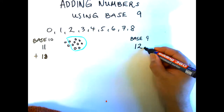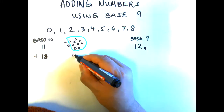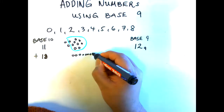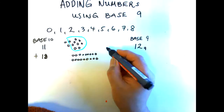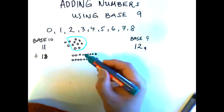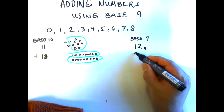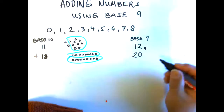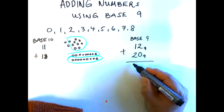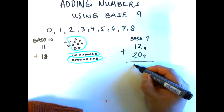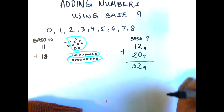So 11 is written as 12 in base 9 — one group of 9 plus 2 outside. The same process applies to 18. Counting 18 objects: 1, 2, 3, 4, 5, 6, 7, 8, 9 — how many groups of 9 in 18? We get 2 groups of 9 and nothing outside, so 18 is written as 20 in base 9. Adding them: 1 nine plus 2 nines gives 3 nines, and 2 outside — the answer is 32 in base 9.